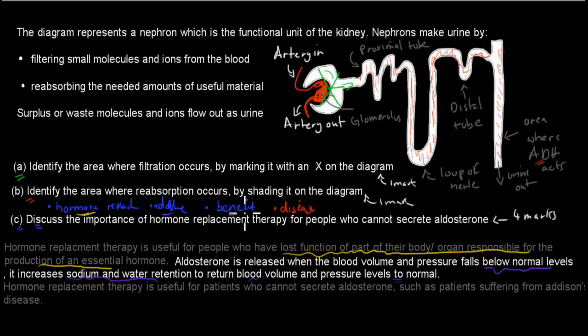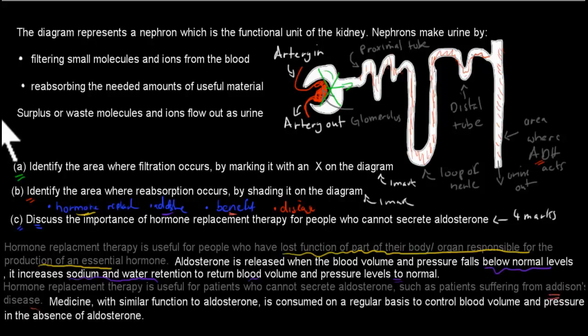So what I wrote next is the benefit of hormone replacement therapy. Hormone replacement therapy is useful for patients who cannot secrete aldosterone, such as patients suffering from Addison's disease.